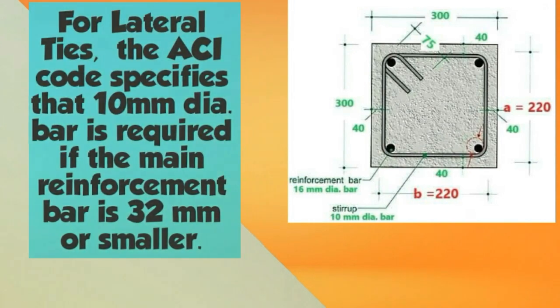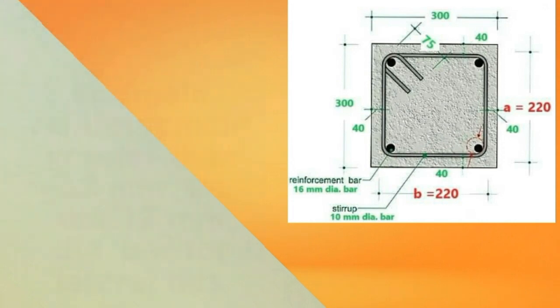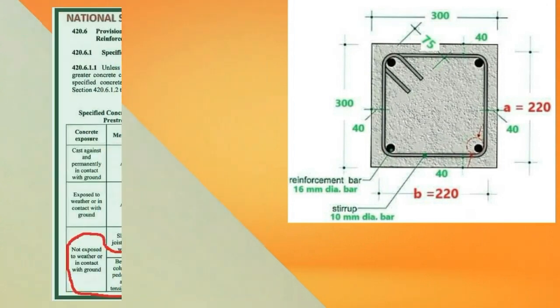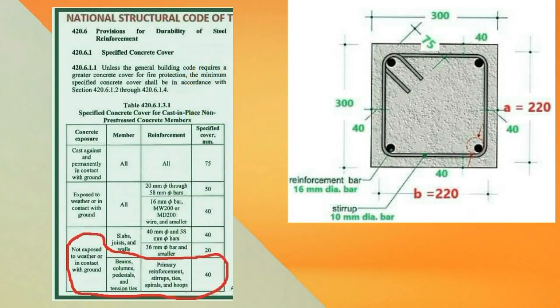For lateral ties, the ACI code specifies that 10 millimeter diameter bar is required if the main reinforcement bar is 32 millimeter or smaller. In our sample column, our main reinforcement bar is 16 millimeter, which is smaller than 32 millimeter, so we use 10 millimeter diameter bar for our lateral ties. For main reinforcement greater than 32 millimeter, we use 12 millimeter diameter bar for lateral ties.